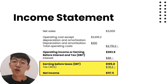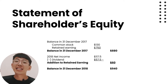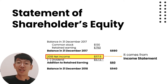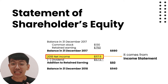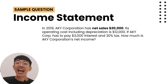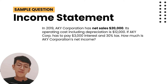Now look back at the statement of shareholder equity in the previous video — the net income is 117.5 dollars, and yes, it comes from the income statement. Now you can see the relation between each financial statement. Let's examine your understanding again. AKY Corporation in 2019 has net sales of 20,000 dollars and operating cost including depreciation of 12,000 dollars.